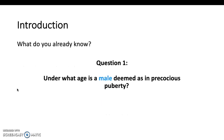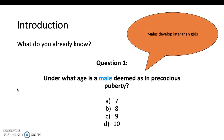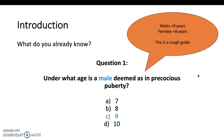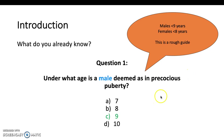A few questions to test your prior knowledge. Question 1: under what age is a male deemed as in precocious puberty — 7, 8, 9, or 10? Note that males generally develop later than girls. For males, it's generally under 9 years; if they start puberty under 9 years, they're deemed in precocious puberty. For girls, it's under 8 years. This is a rough guide, however, because development varies so much. It's useful to follow as it stops us from missing a more serious underlying cause as opposed to a variation of the normal.